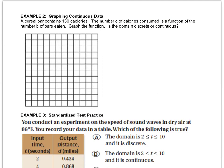In this example, we're going to try it again. A cereal bar contains 130 calories. The number C of calories consumed is a function of the number of B bars eaten. Graph the function. Since I can't have negative calories or bars, I'm going to stay in this graph and use theirs. So I'll make B and C.